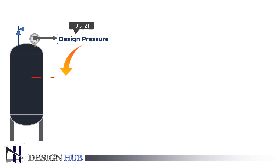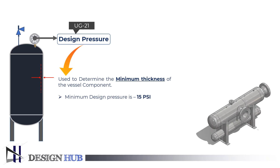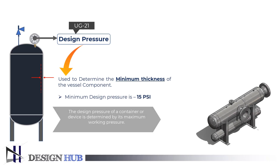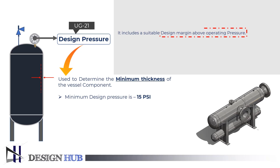Design pressure is the maximum pressure a system faces, which is imposed on the internals and externals of equipment and is used to determine the minimum required thickness. The minimum design pressure is 15 PSI. The design pressure of a container or device is determined by its maximum working pressure. After getting the operating pressure, designers add some suitable margins to get the design pressure.